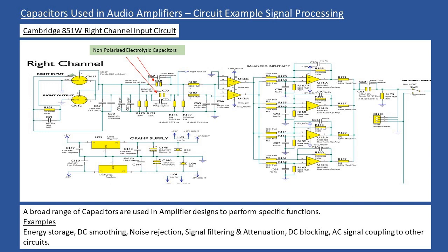Examples of capacitor functions: in a power supply, energy storage — after rectification a capacitor charges up and smooths out the AC ripple. We use capacitors for noise rejection, signal filtering combined with resistors, attenuation, DC blocking, and AC coupling between different circuits in the amplifier. From an AC signal perspective, once in the circuit the capacitor is effectively invisible, passing the AC signal through while blocking DC.